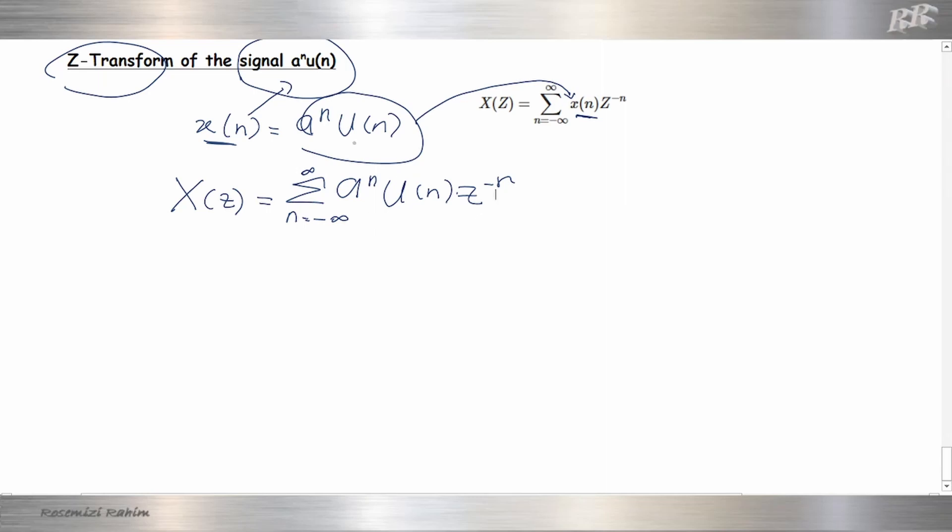The signal for u(n), the unit step signal, is like this. We have 1, 2, 3, 4 and n, 0 here, minus 1, minus 2, minus infinity. For unit step function or signal it will be like this.